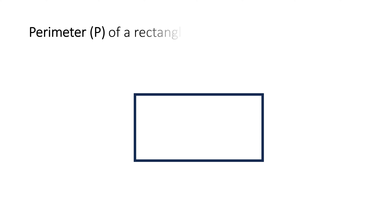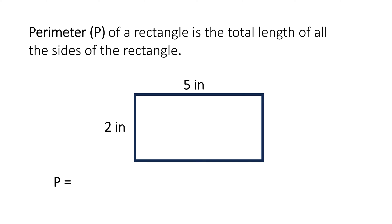The perimeter of a rectangle is the total length of all sides of the rectangle. This rectangle is 2 inches by 5 inches. To find the perimeter we will write out the formula and start with the letter P. P or the perimeter equals side plus side plus side plus side.